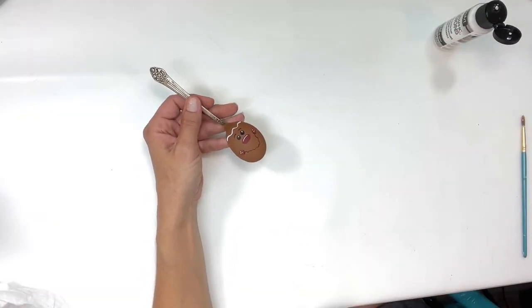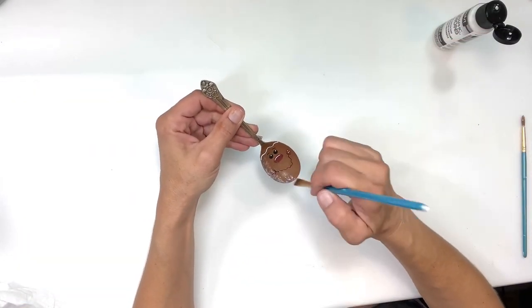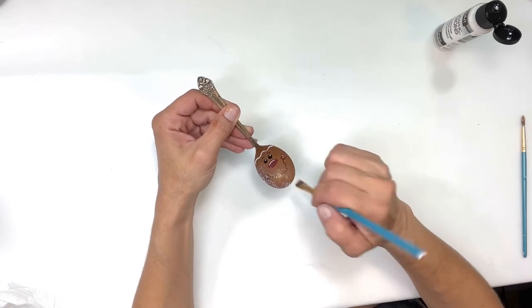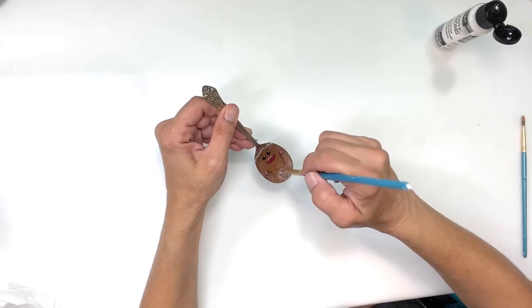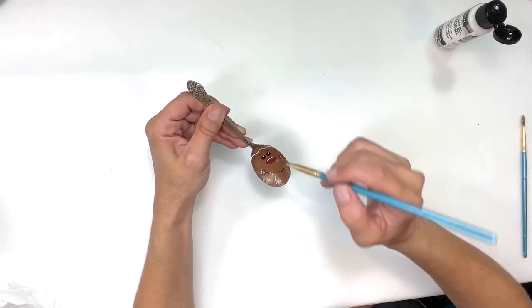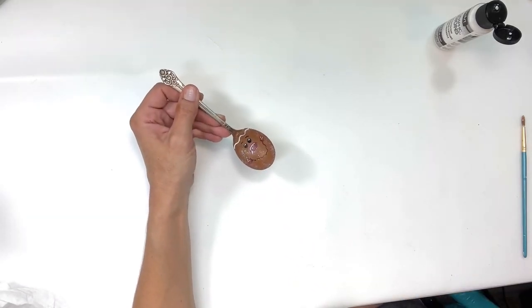Next I'm going to take some holographic illusions, which is just a glitter paint, and I'm going to add that all over his face once everything was fully dry. When you do the dots for the nose and eyes, they kind of stay wet for a while, so make sure everything's fully dry before you do this part.